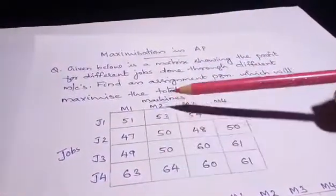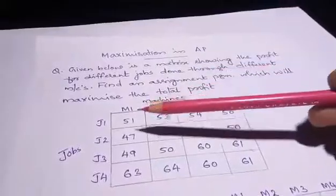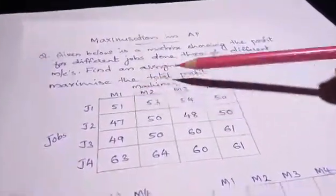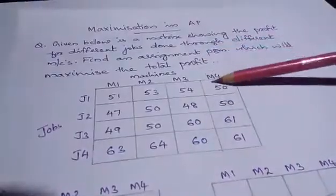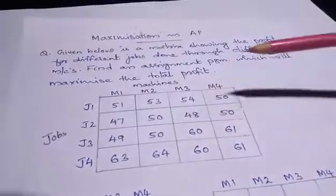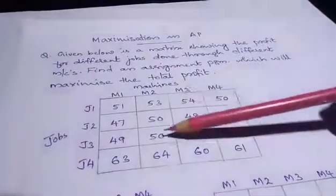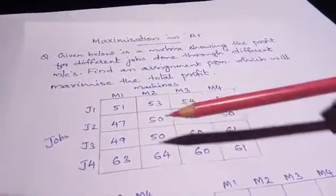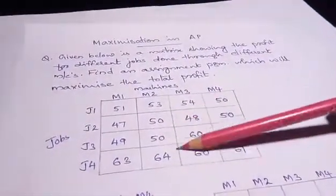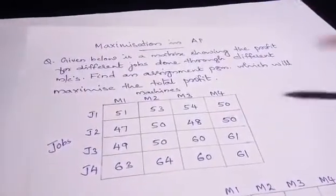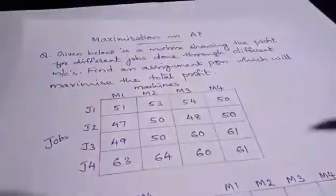The table has Job 1 through Job 4 and Machines 1 through 4. The values are: J1-M1: 51, 53, 54, 50; next row: 47, 50, 48, 50; next row: 49, 50, 60, 61; and last row: 63, 64, 60, 61. These are the cell values in our profit matrix.